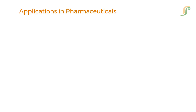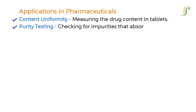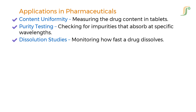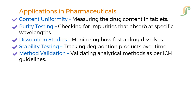In pharmaceutical labs, UV-visible spectrophotometry is used everywhere from development to quality control. It is used to determine content uniformity and measure drug content in tablets; for purity testing by checking for impurities that absorb at specific wavelengths; in dissolution studies to monitor how fast a drug dissolves; in stability testing to track degradation products over time; and in method validation as per ICH guidelines. Because it is non-destructive, simple, and cost-effective, it is widely used in both R&D and quality control.